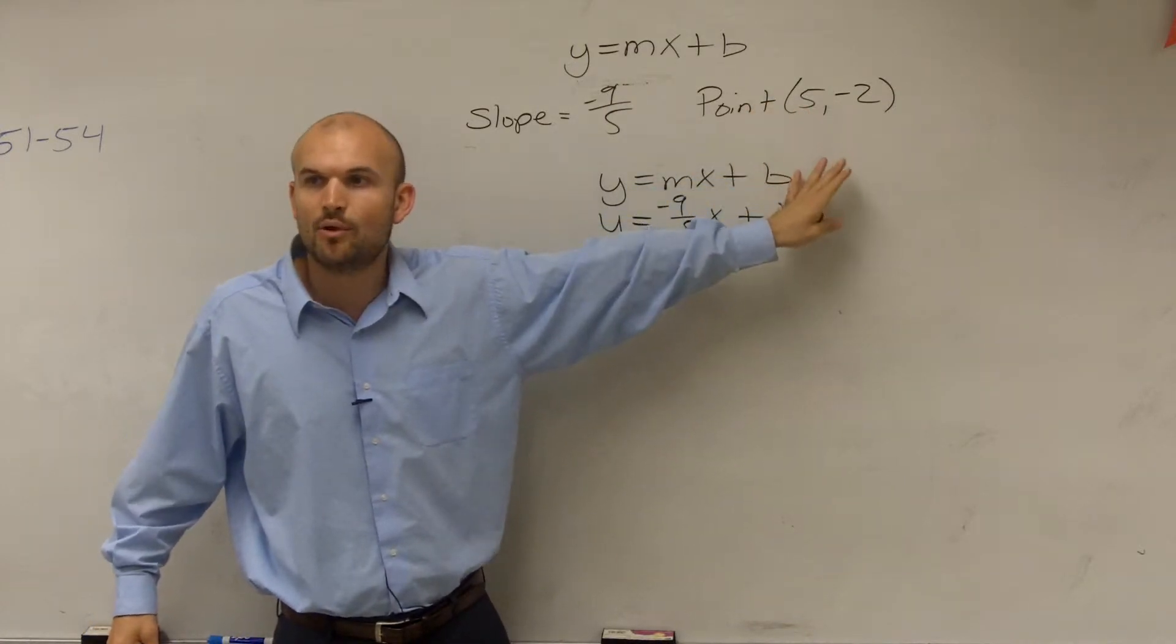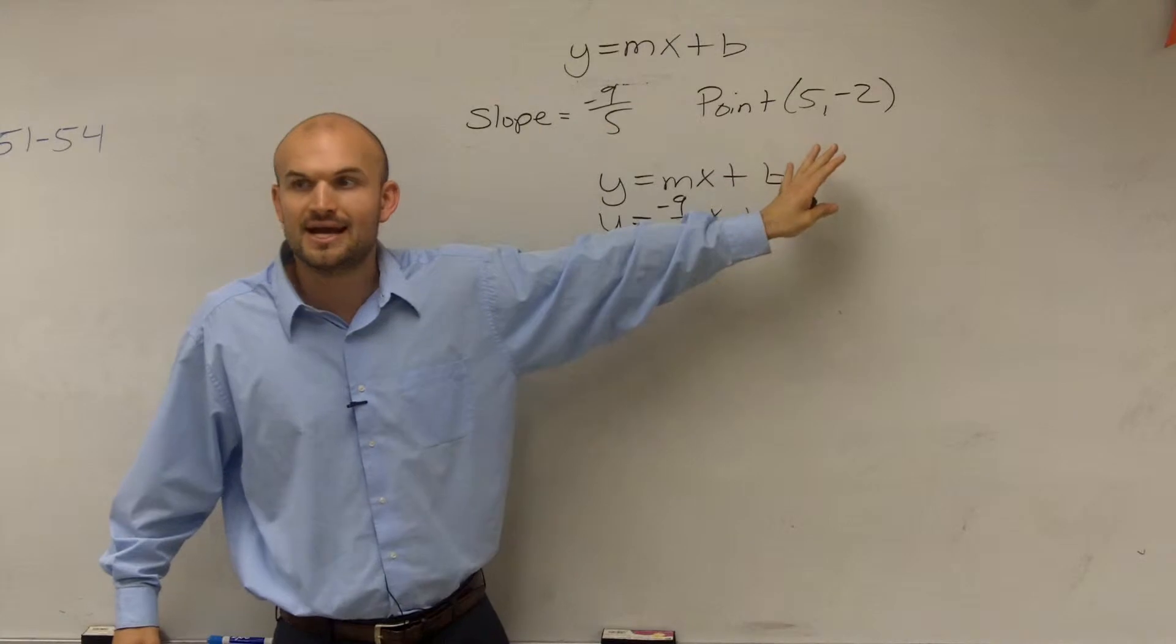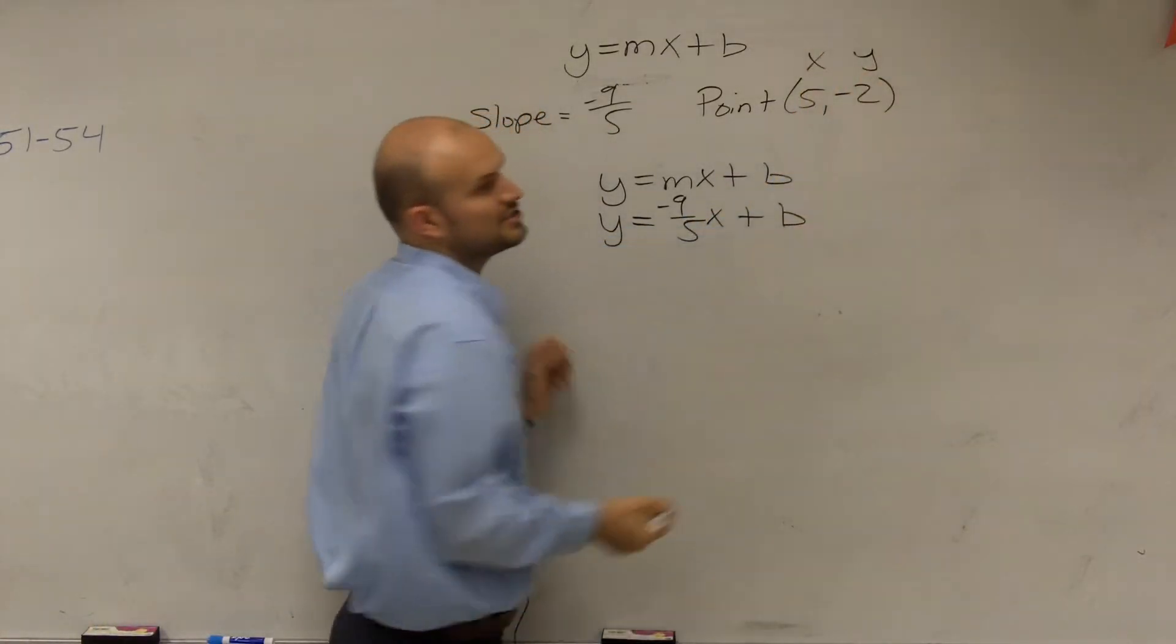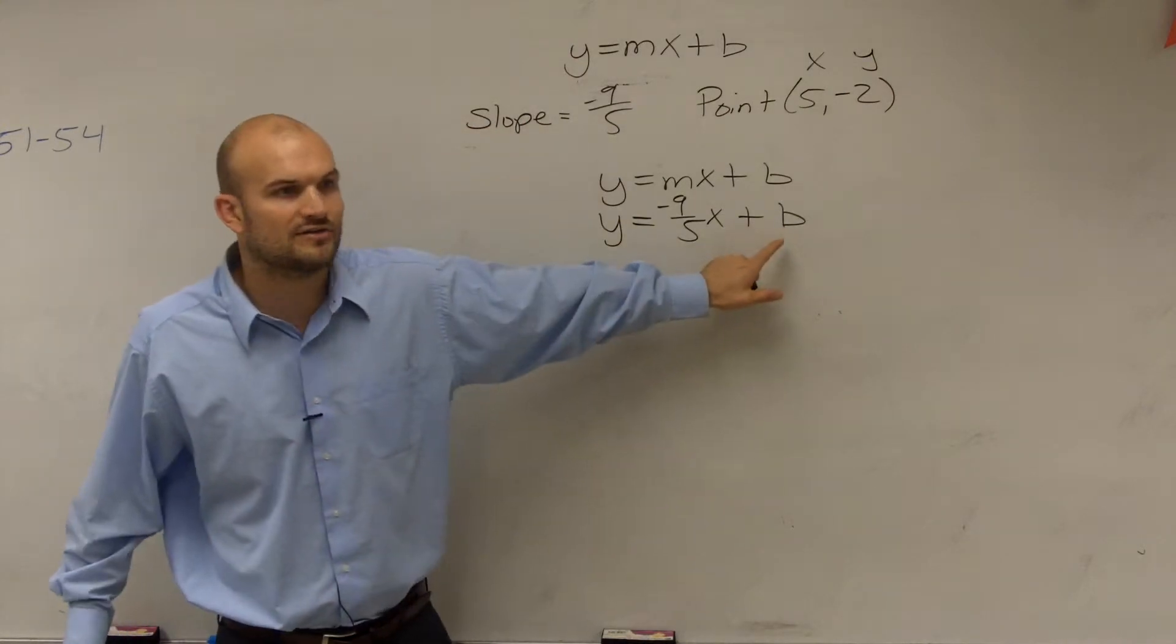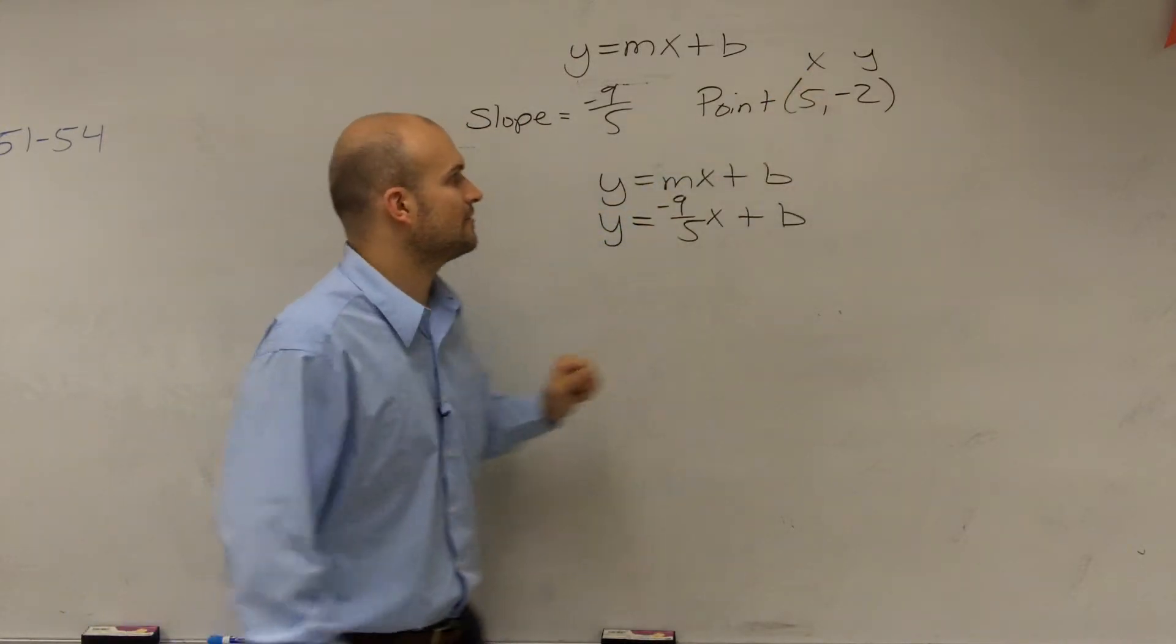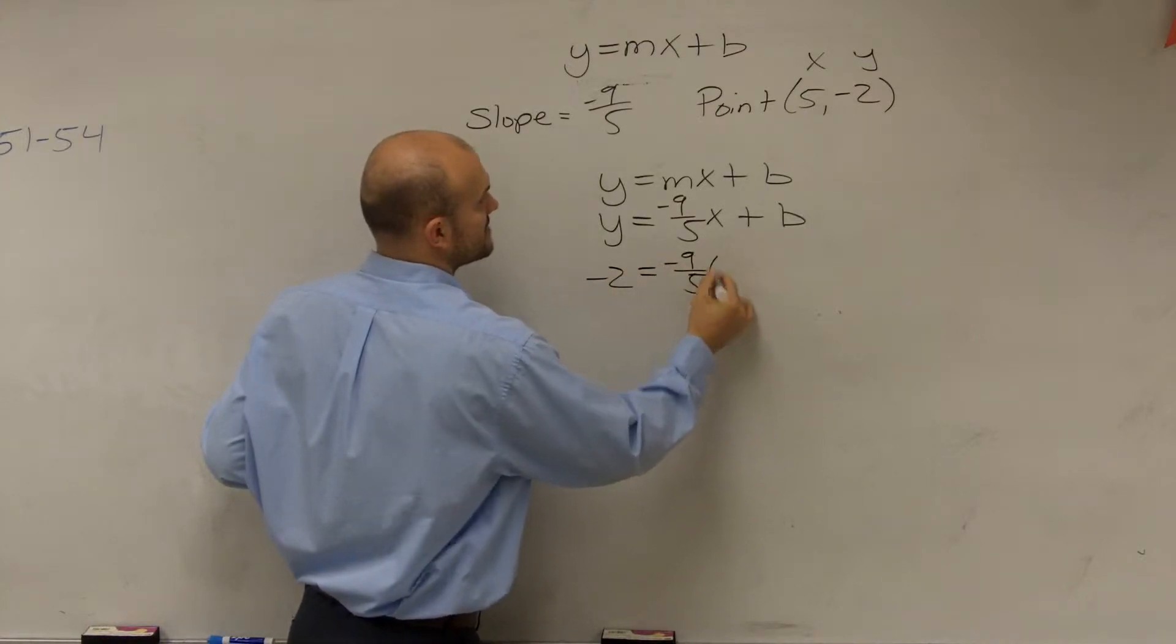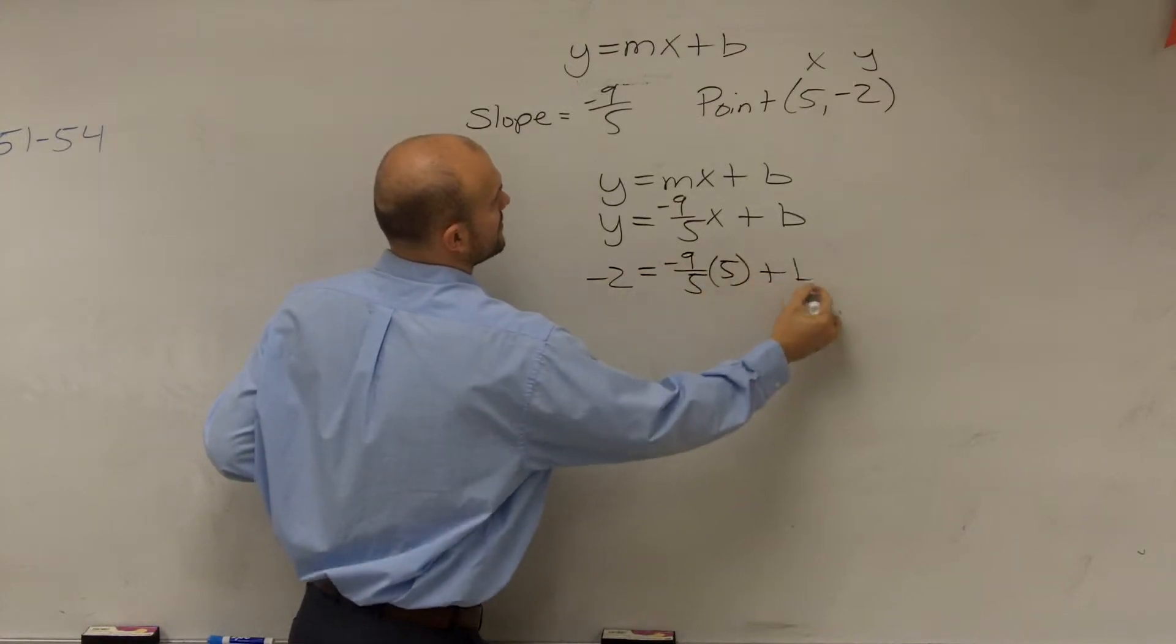Well, remember, every point on a line has an x and a y-coordinate. So what I can do to find my value of b, I can plug these in for x and y. So negative 2 equals negative 9 fifths times 5 plus b.